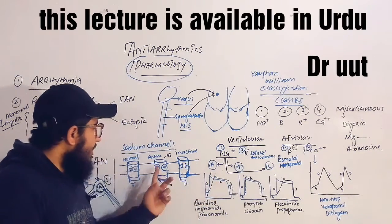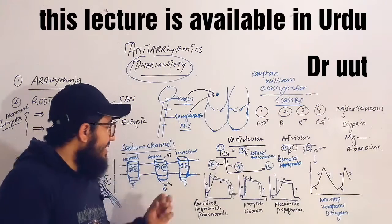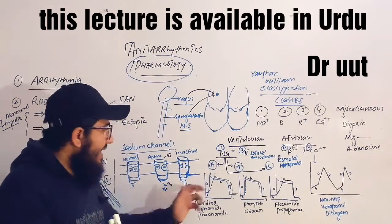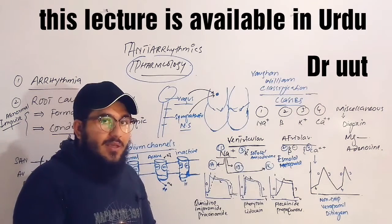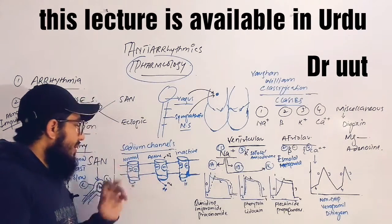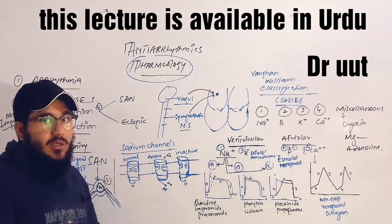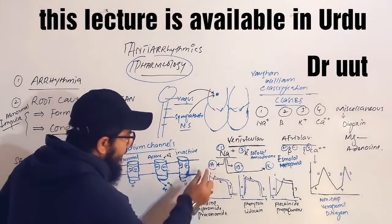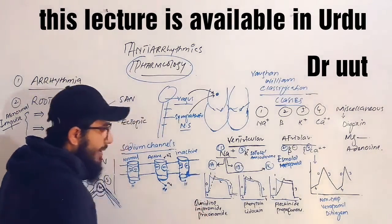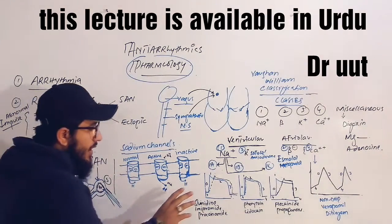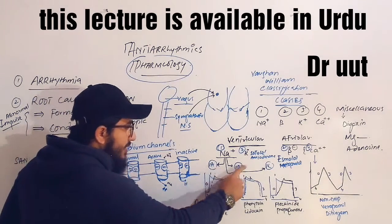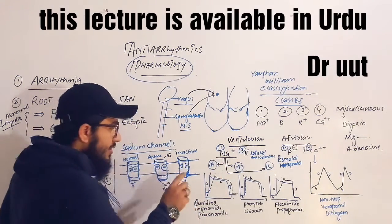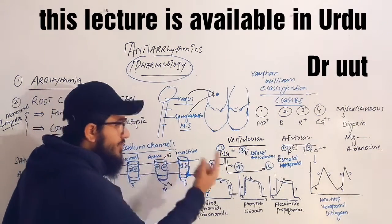Class 1A acts on both the active and inactive states. Class 1B also acts on active and inactive states but in a very quick manner. Class 1C acts on the normal sodium channel as well. Class 1A drugs include quinidine, disopyramide, and procainamide. All subclasses act on both sodium and potassium channels — sodium being responsible for depolarization in phase 0, and potassium for repolarization in phase 3.